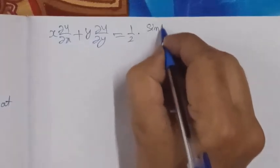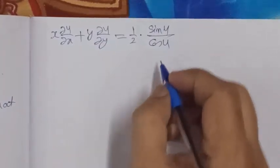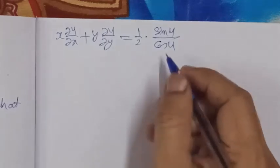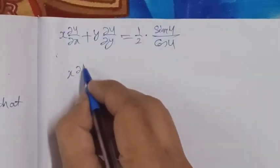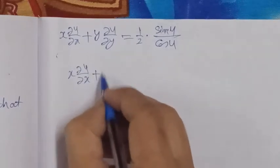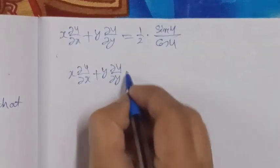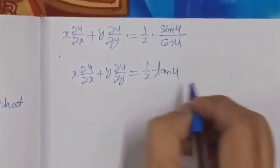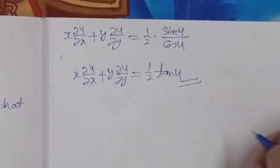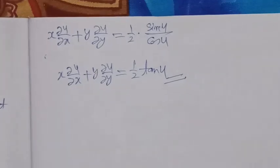We have x del u over del x plus y del u over del y equals 1 by 2 sin u upon cos u. Since sin upon cos equals tan, this equals 1 by 2 tan u. Hence proved.